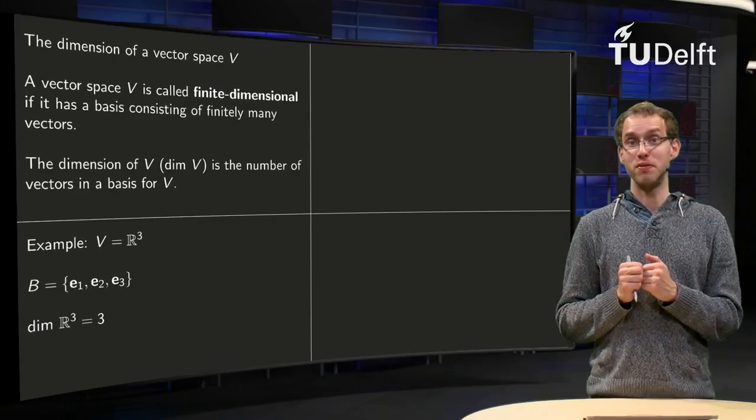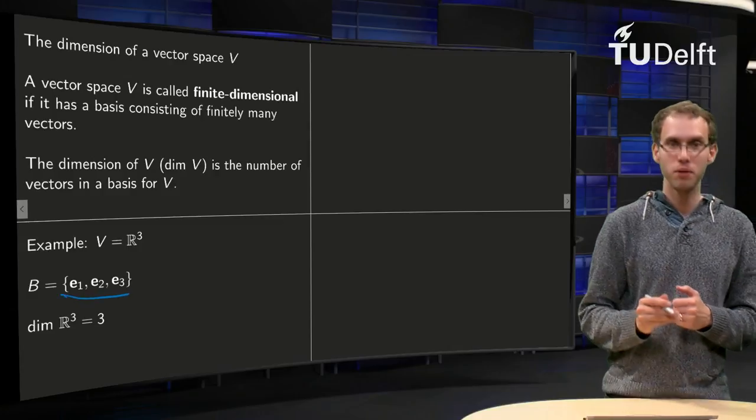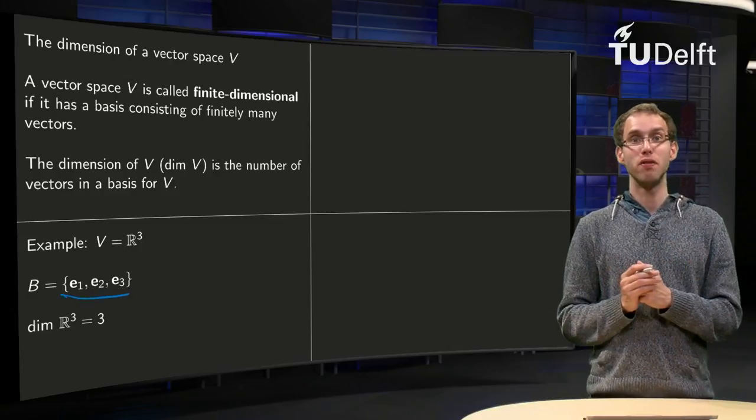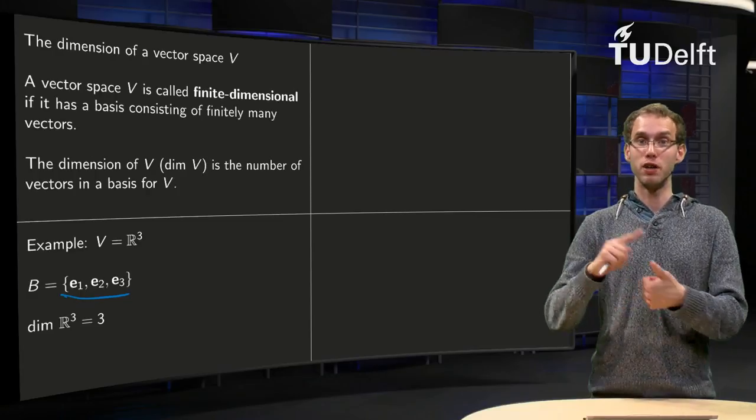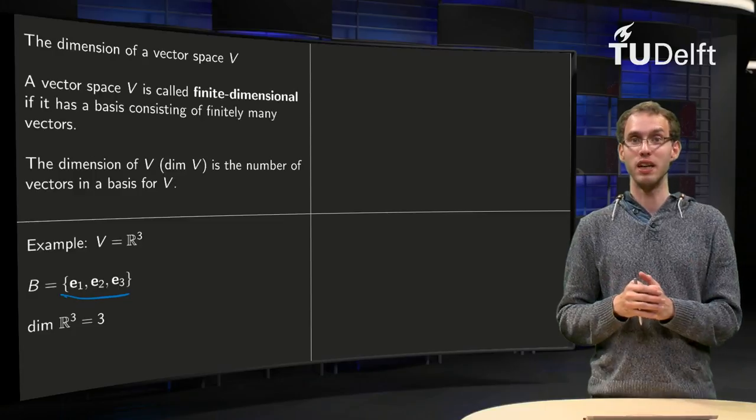For example, what happens if you have R^3? First we need the basis. We can for example take the standard basis: e_1, e_2, and e_3. So what is the dimension of R^3? Well, in our basis we have e_1, e_2, and e_3 - three vectors - so the dimension of R^3 equals 3.